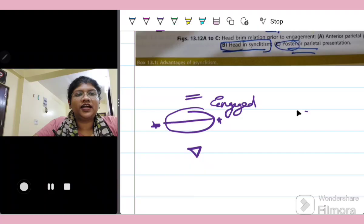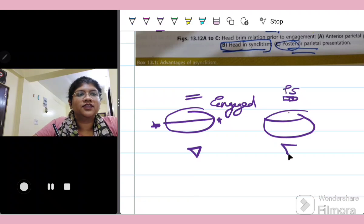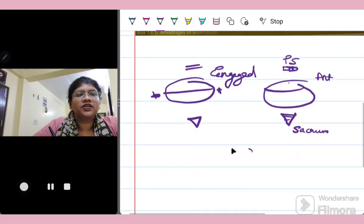But in reality, what happens, the head tends to deflect or the sagittal suture tends to deflect sometimes more anteriorly, that is the pubic symphysis. This is the pubic symphysis. This is the sacrum. This mechanism is called as asynclitism. Tends to deviate anteriorly more or sometimes it can even deviate posteriorly.